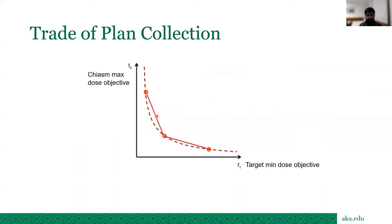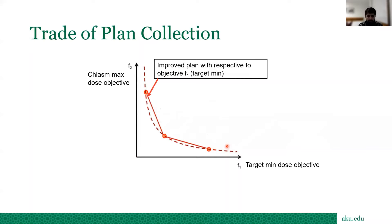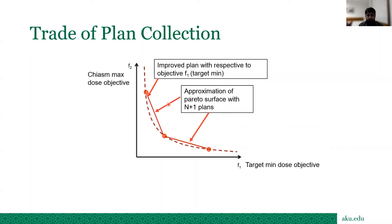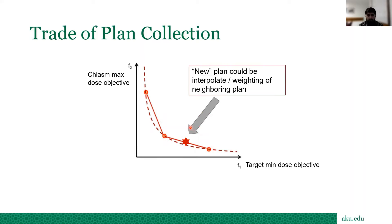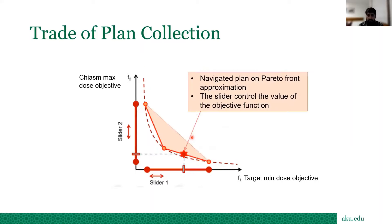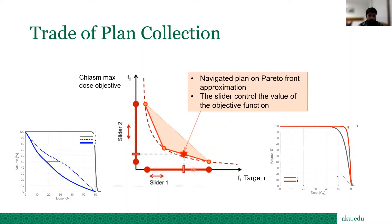Taking the example of the optic chiasm: the system tries to navigate and improve the plan with respect to F1 target minimum, approximating along the Pareto surface. This is the balanced plan, and this is the improved plan if optic chiasm improvement is prioritized. The solution can be found in between — a new plan interpolated by weighting of neighbor plans. There is a slider bar you move left and right to explore these solutions.